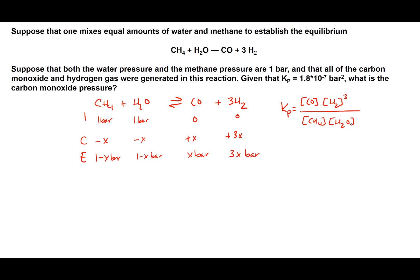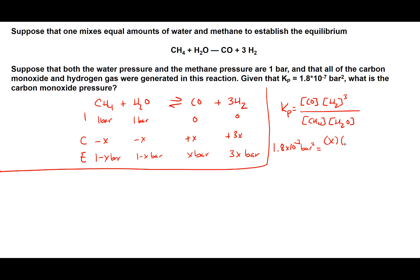Now we plug in all the values. The KP value of 1.8 times 10 to the negative 7 bar squared equals the concentration of CO, which at equilibrium is X, times the concentration of H2 — which is 3X — cubed. CH4 and H2O each have a concentration of 1 minus X, so the denominator is (1 minus X)(1 minus X).